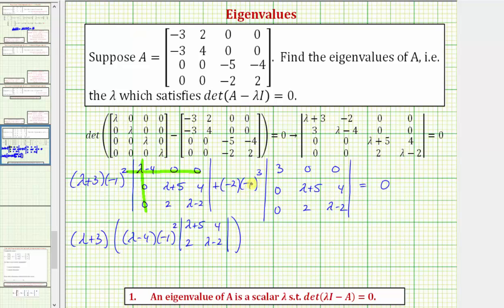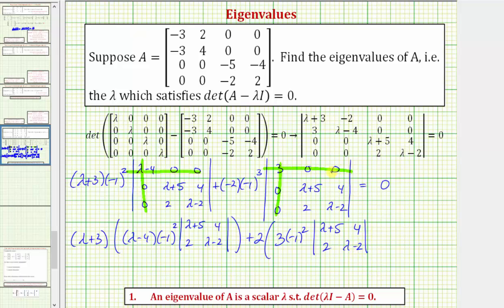Here we have plus negative two times negative one, that's positive two, so we have plus two times — using the cofactor method on row one — three times negative one to the second, because this three is in row one, column one, one plus one is two, times the two by two determinant formed by eliminating row one, column one: lambda plus five, four, two, lambda minus two. The remaining elements in row one are zero, so we stop the expansion. All of this on the left must equal zero.